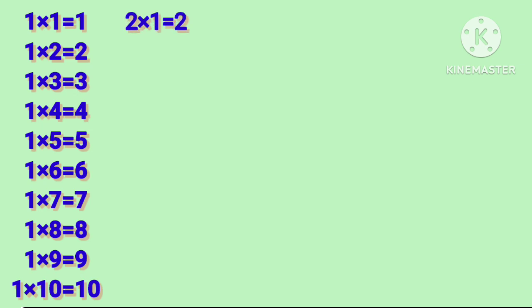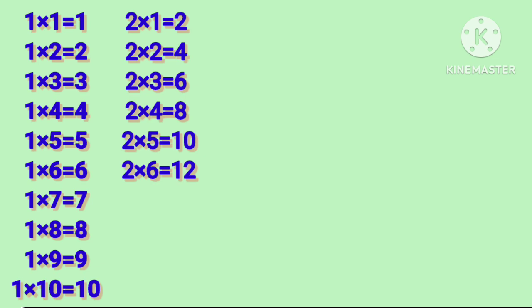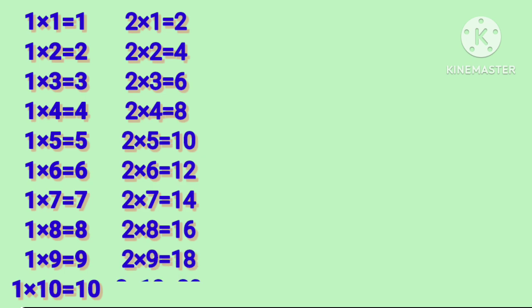2 1's are 2, 2 2's are 4, 2 3's are 6, 2 4's are 8, 2 5's are 10. 2 6's are 12, 2 7's are 14, 2 8's are 16, 2 9's are 18, 2 10's are 20.